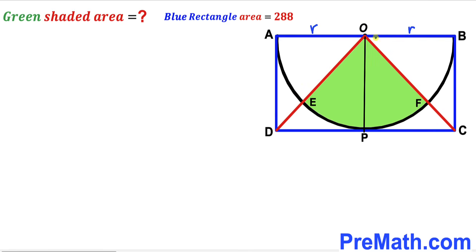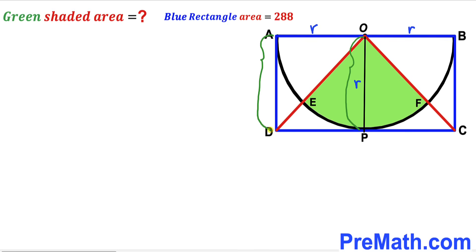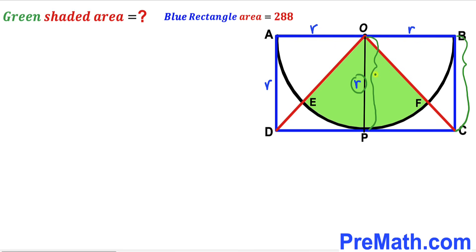In the next step, we connect center O with point of tangency P. We can see that OP is the radius of the semicircle as well, so we label it lowercase r. Since OP is the same length as AD, the AD length is also r. Similarly, OP equals BC, so BC is lowercase r as well.